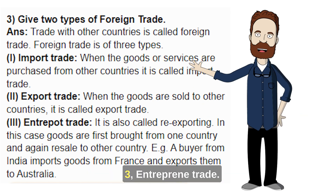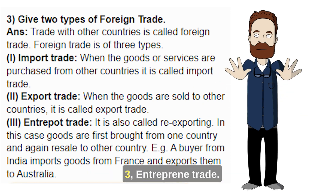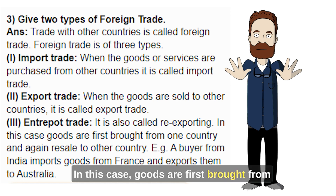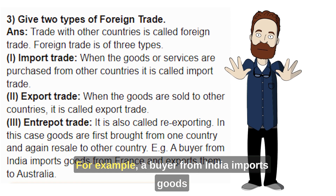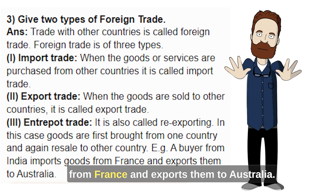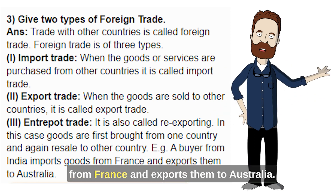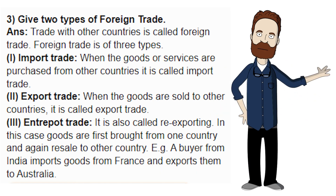3. Entrepot trade: it is also called re-exporting. In this case, goods are first brought from one country and again resold to another country. For example, a buyer from India imports goods from France and exports them to Australia.